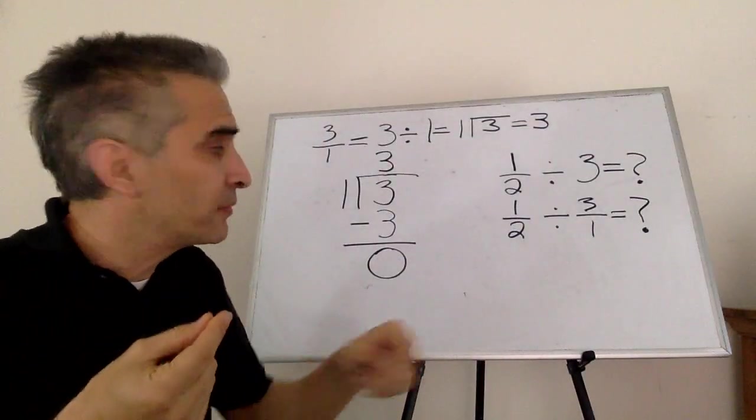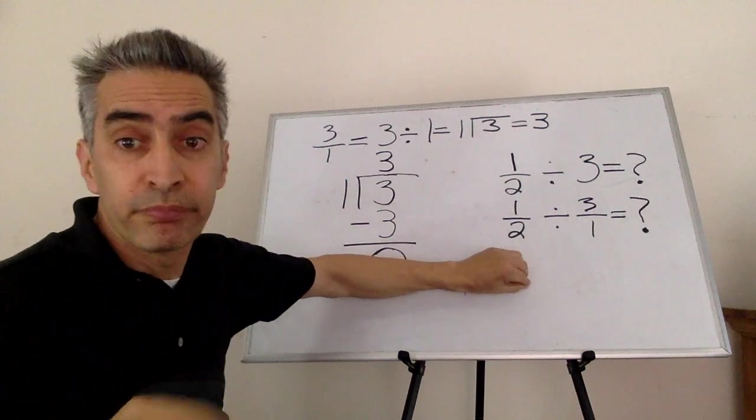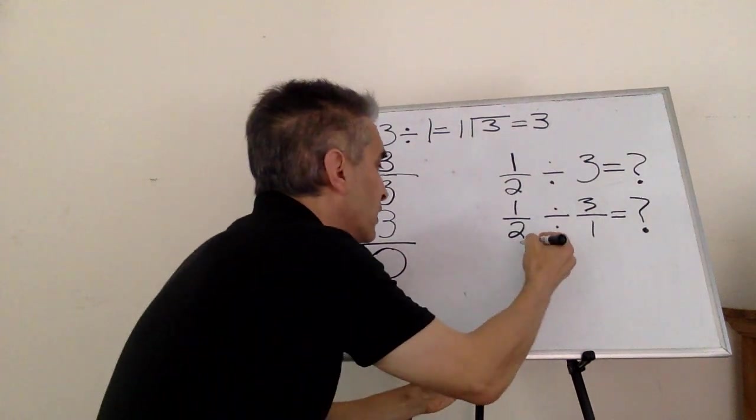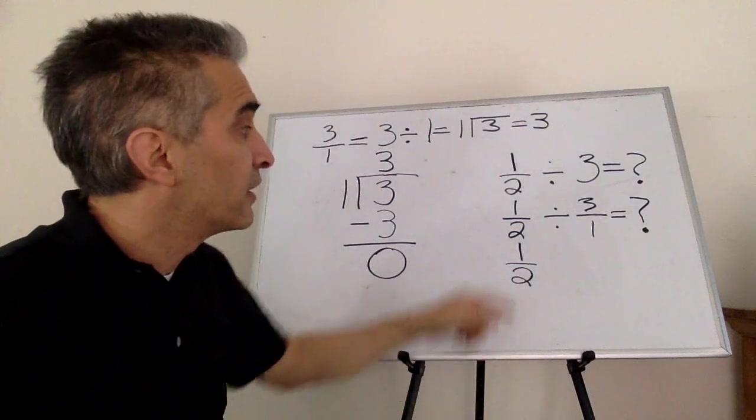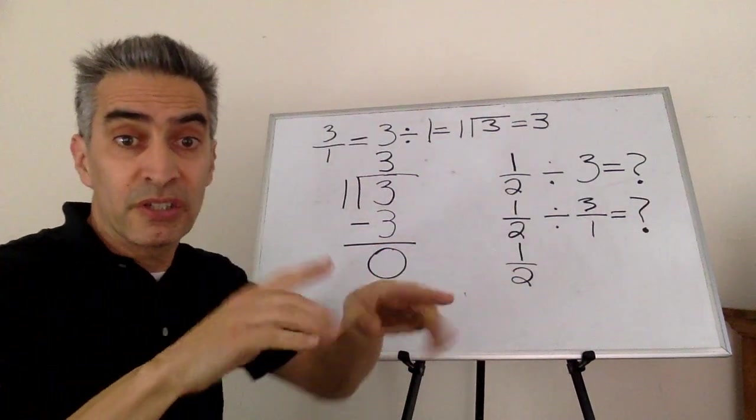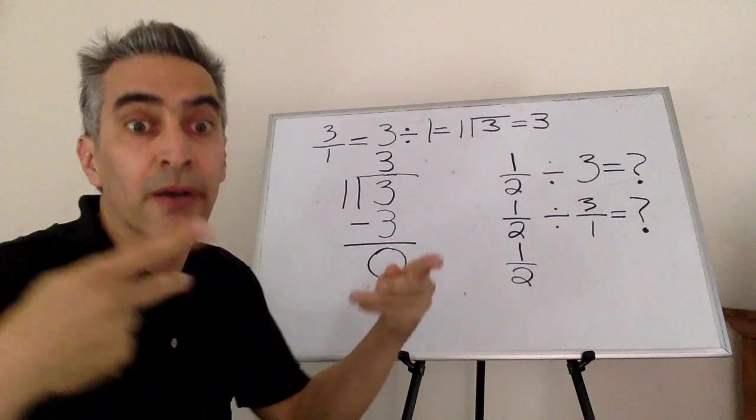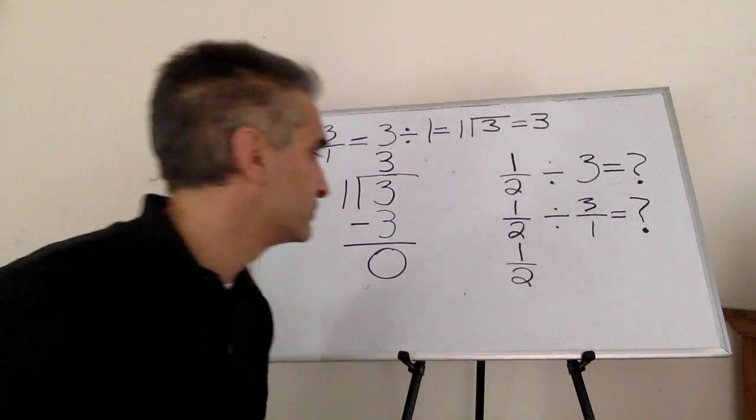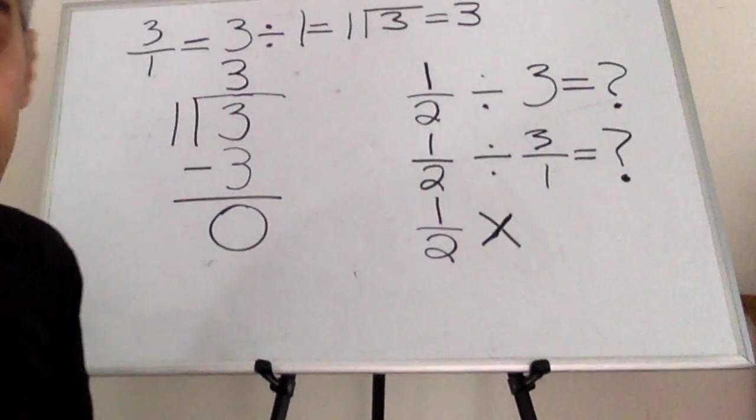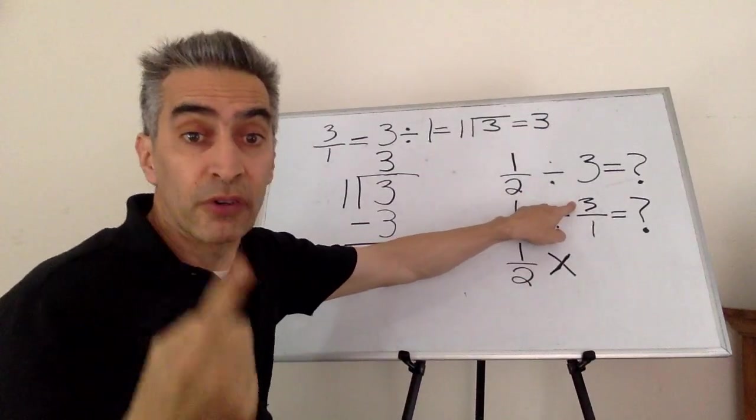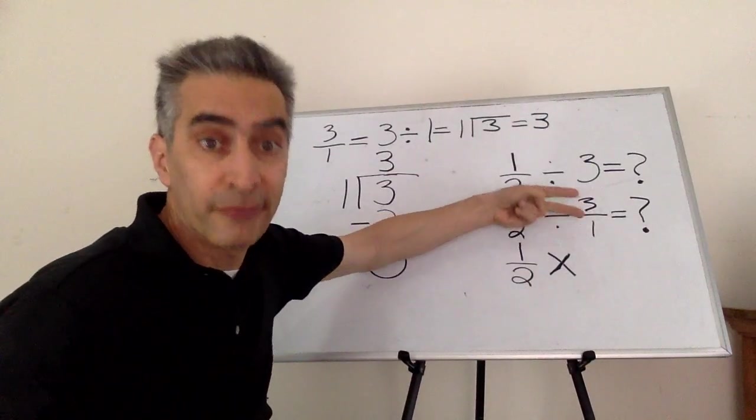Next, what are we going to do? This one half, we're going to bring it right down here. Division becomes multiplication. And this three over one, we flip it.